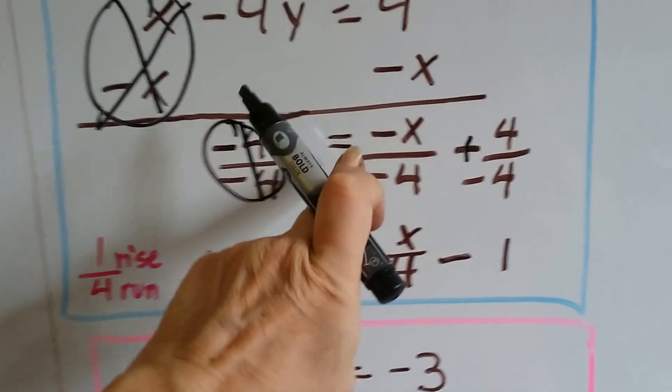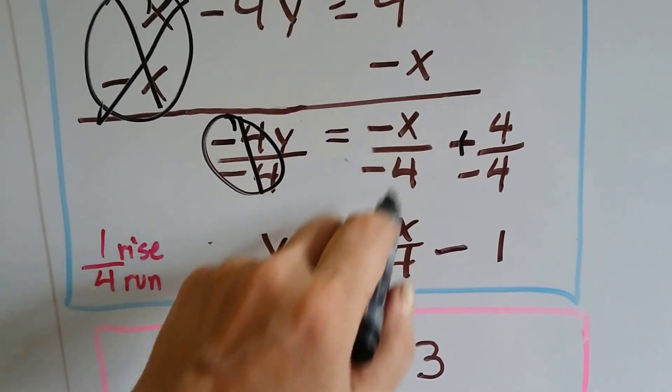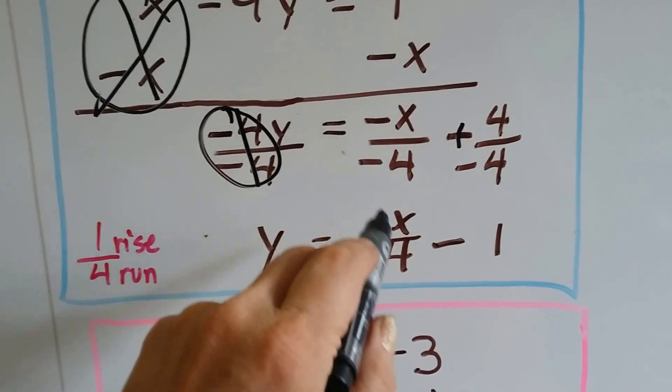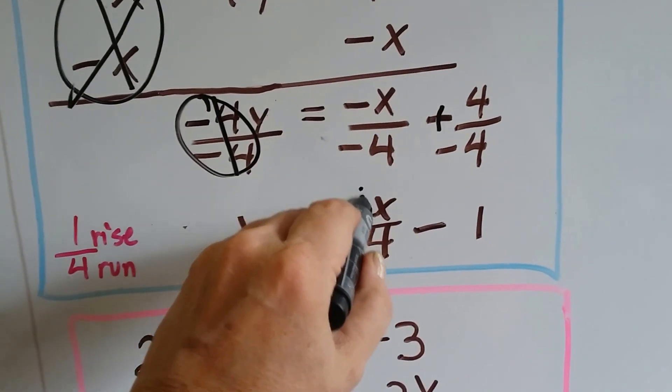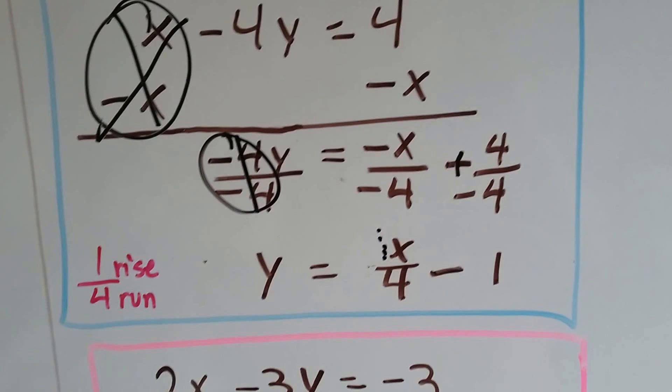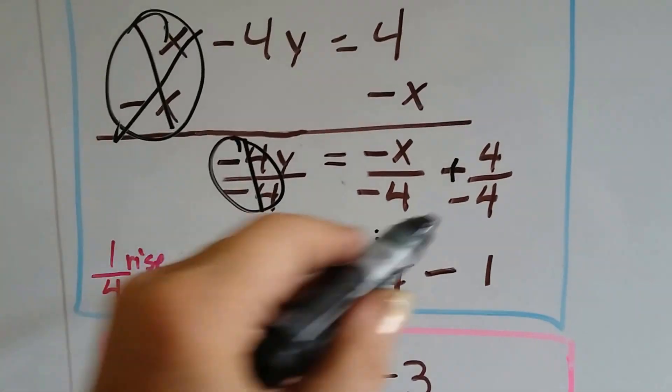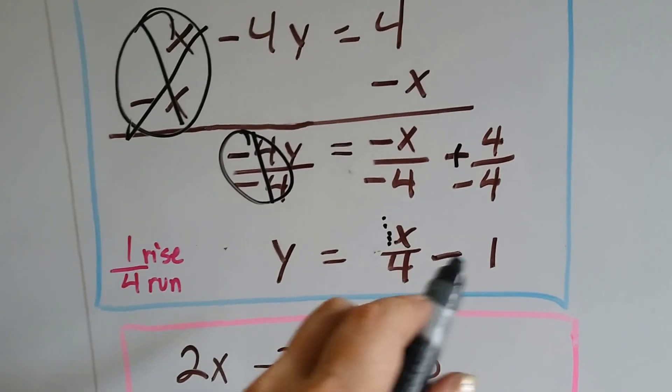Then we've got a negative x divided by a negative 4. That's going to give us a positive x over 4 because of the two negatives. And remember our friend the invisible 1 is there. Whenever you see a variable by itself, there's really a 1 in front of it. Then we've got a positive 4 divided by a negative 4. That's going to give us a negative 1.